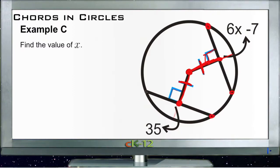And if these two chords here are congruent, then we can write that as an equation. And we can say that 6X minus 7 is congruent to, or is the same thing as, 35.